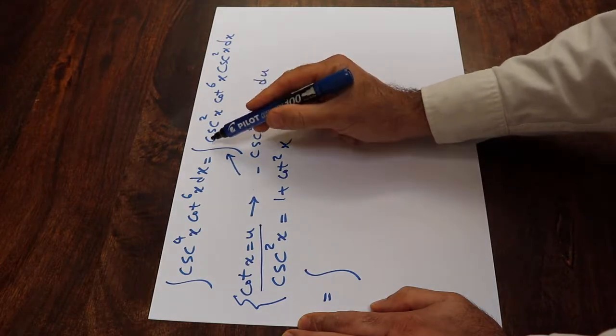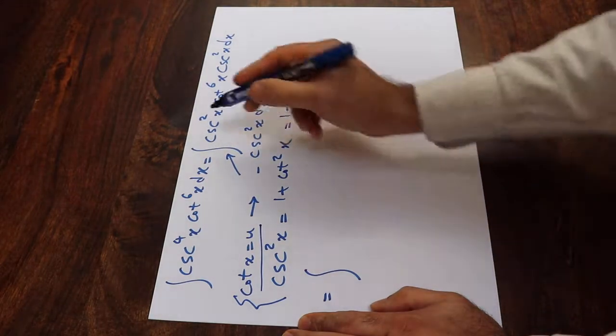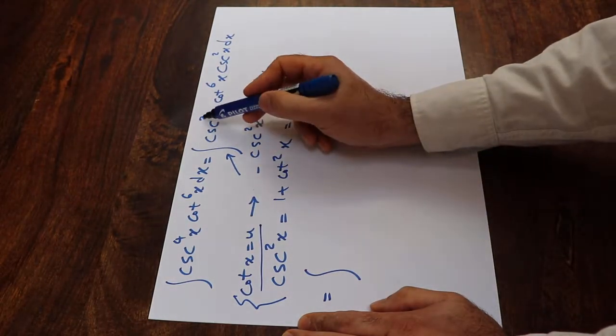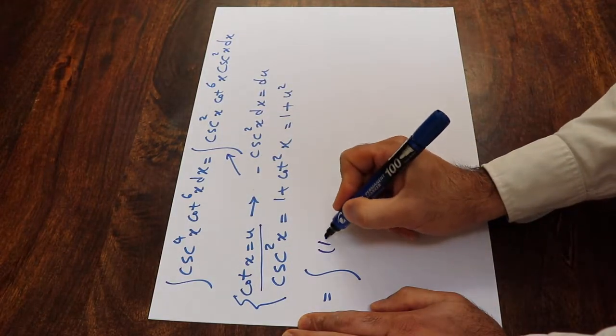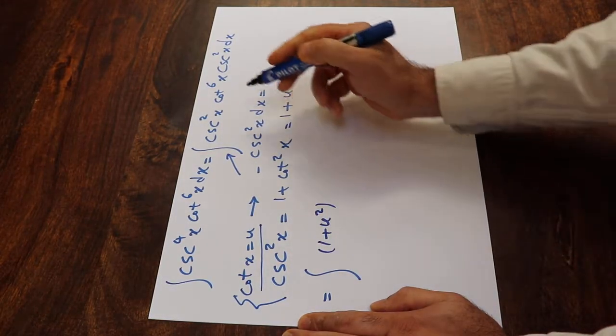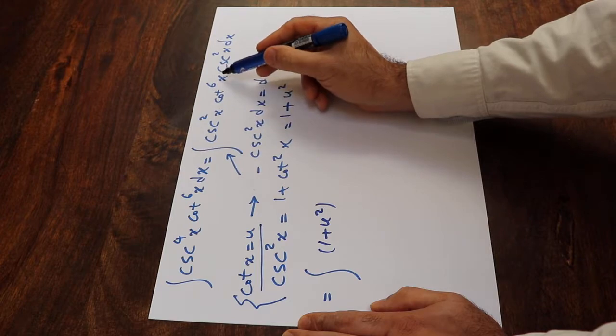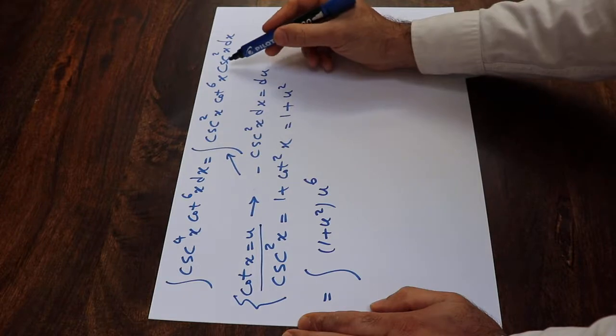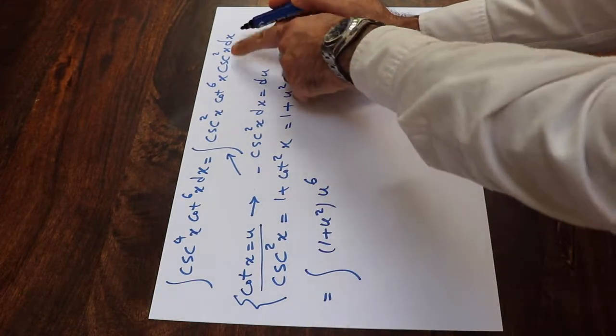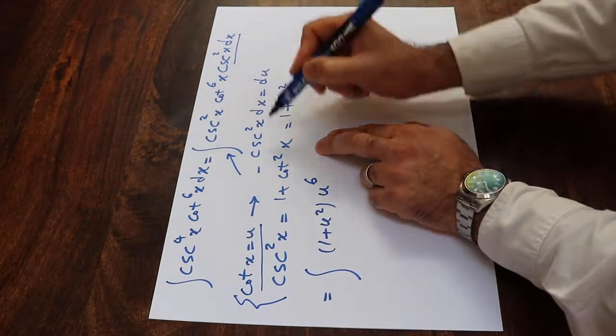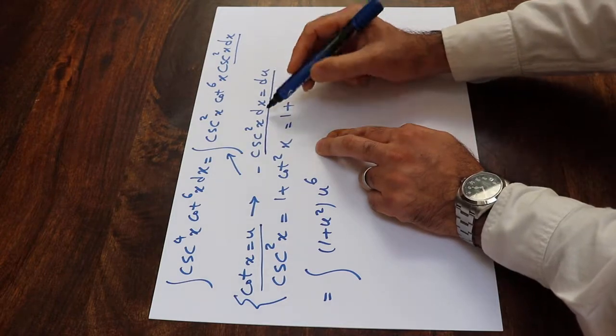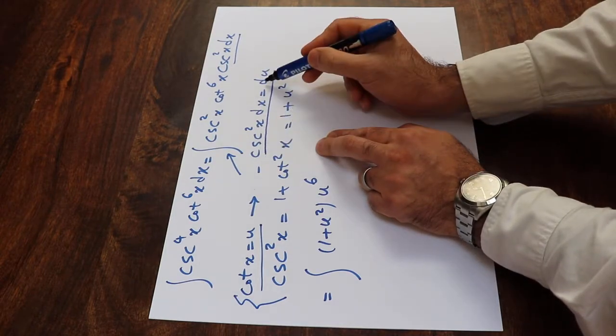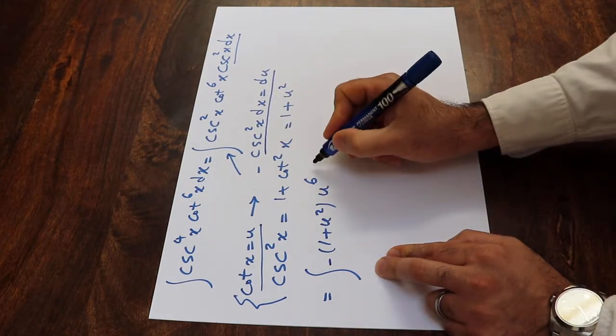Therefore this will be equal to integral of cosecant squared x times (1 plus u squared) times cotangent 6x, which is u to the 6th because cotangent x is u. And cosecant squared x dx equals minus du, so therefore minus du.